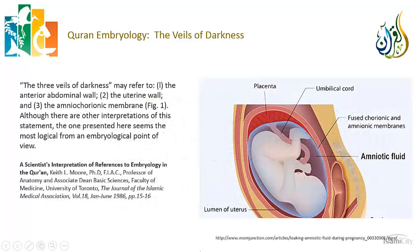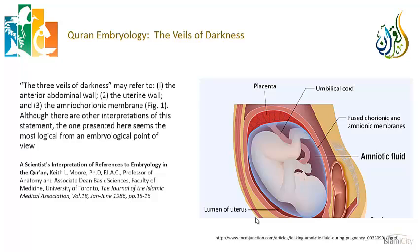Professor Moore, in his article 'A Scientist's Interpretation of References to Embryology in the Qur'an,' says — and I quote directly — the three veils of darkness may refer to the anterior abdominal wall of the mother, then the wall of the uterus, and then the amniochorionic membrane — the sac where the amniotic fluid sits and the baby is inside. He says although there are other interpretations, this one seems the most logical from an embryological point of view. The fetus is entirely in darkness, which is why newborns cannot see — it takes several weeks for the brain to myelinate the occipital cortex, the visual part of the brain, before a baby begins to focus.